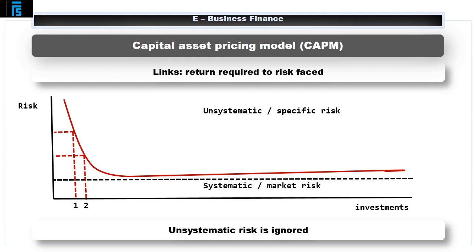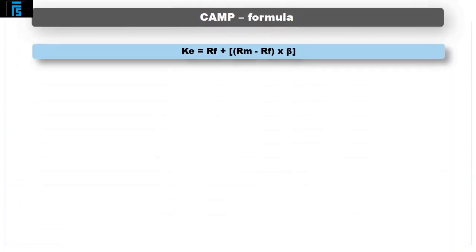Whilst this may be largely true for institutional investors, who employ fund managers for that very reason, it is less appropriate for individual investors. CAPM then assesses the cost of equity by comparing the risk-free return — the return required from a risk-free investment — to the market return — the return required given the average market risk — and is given by the following formula: Cost of equity KE equals RF plus RM minus RF multiplied by beta, where RF is the risk-free return and RM is the market return. Alternatively, RM minus RF is the market premium.